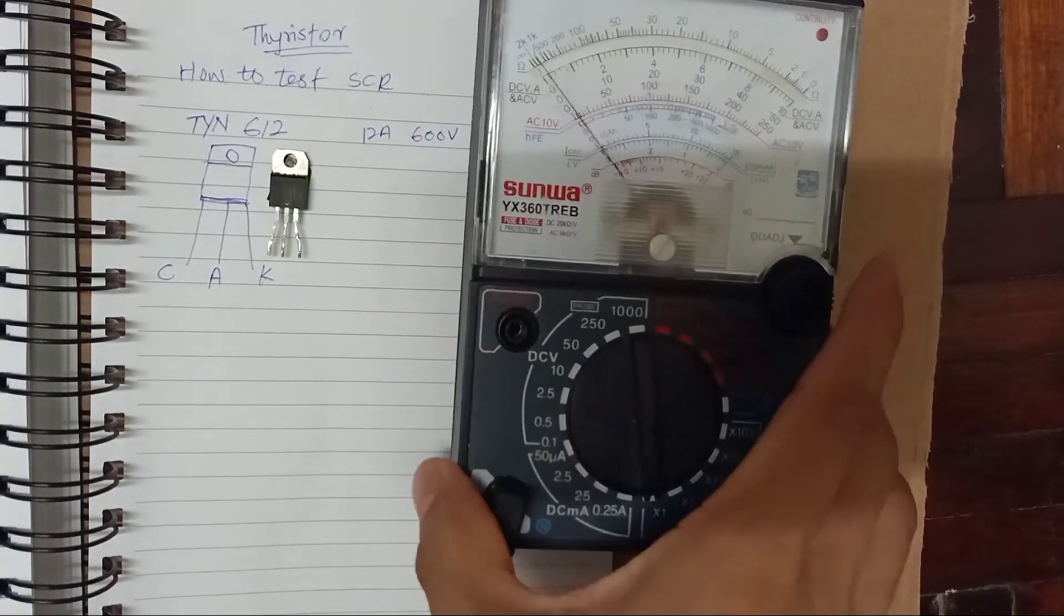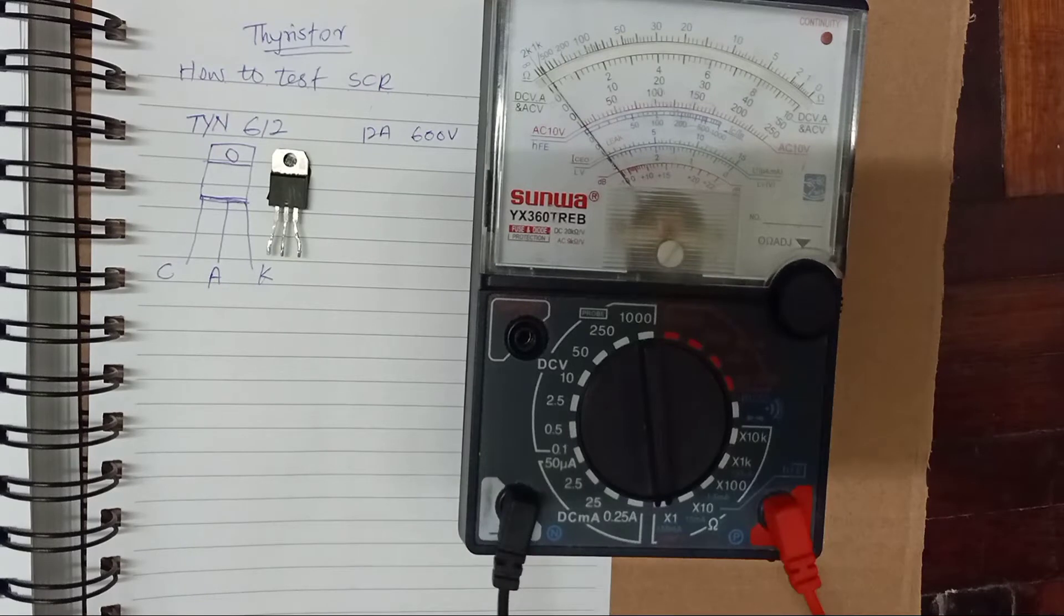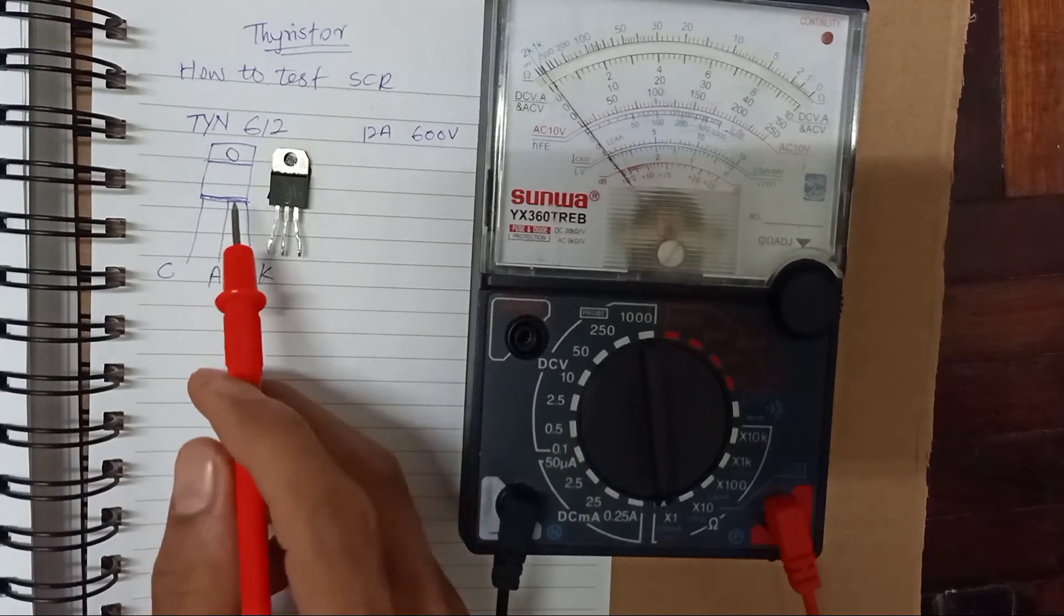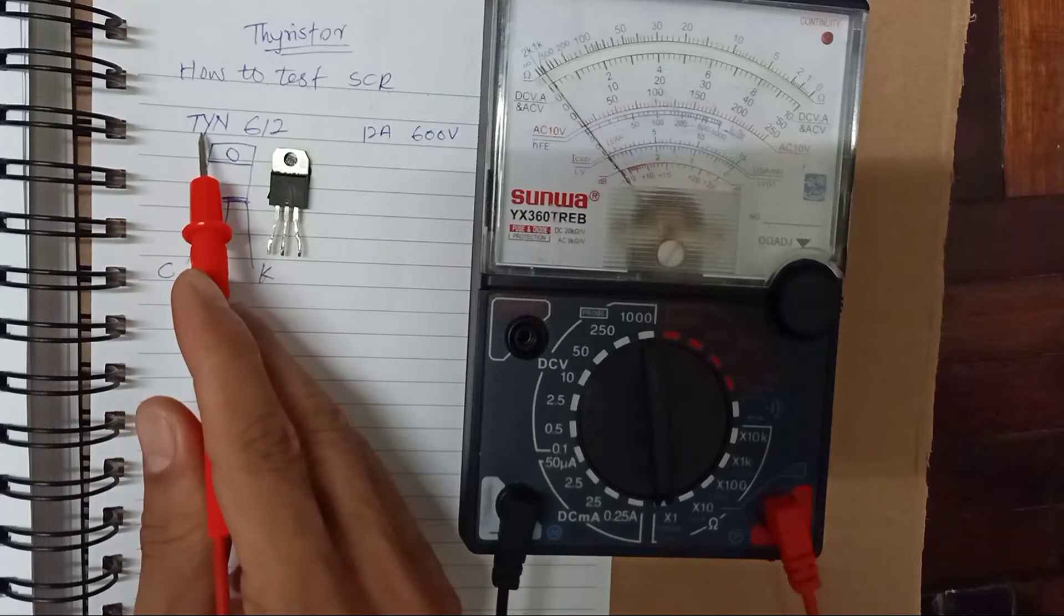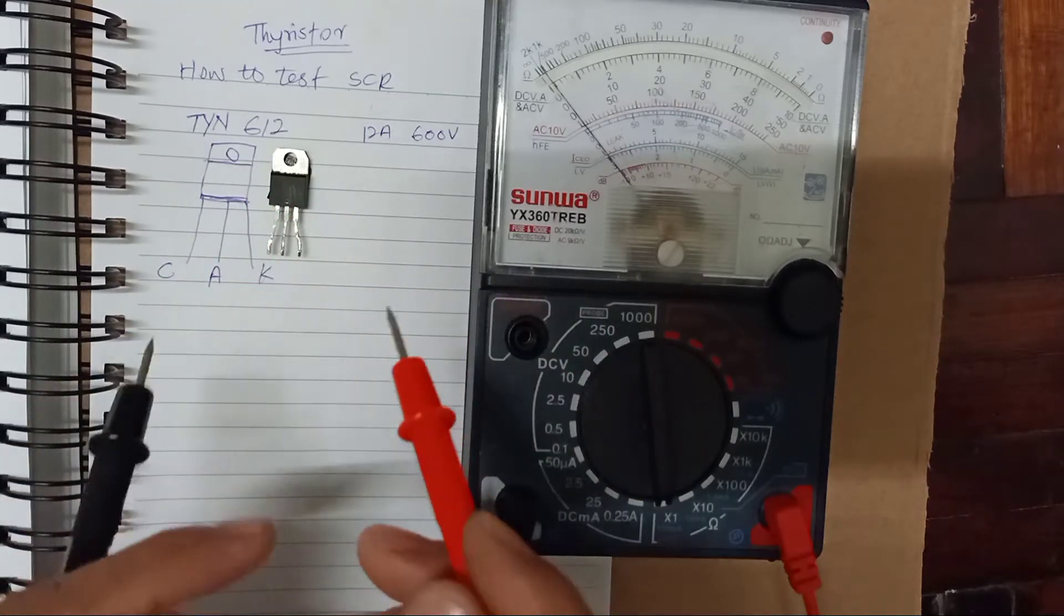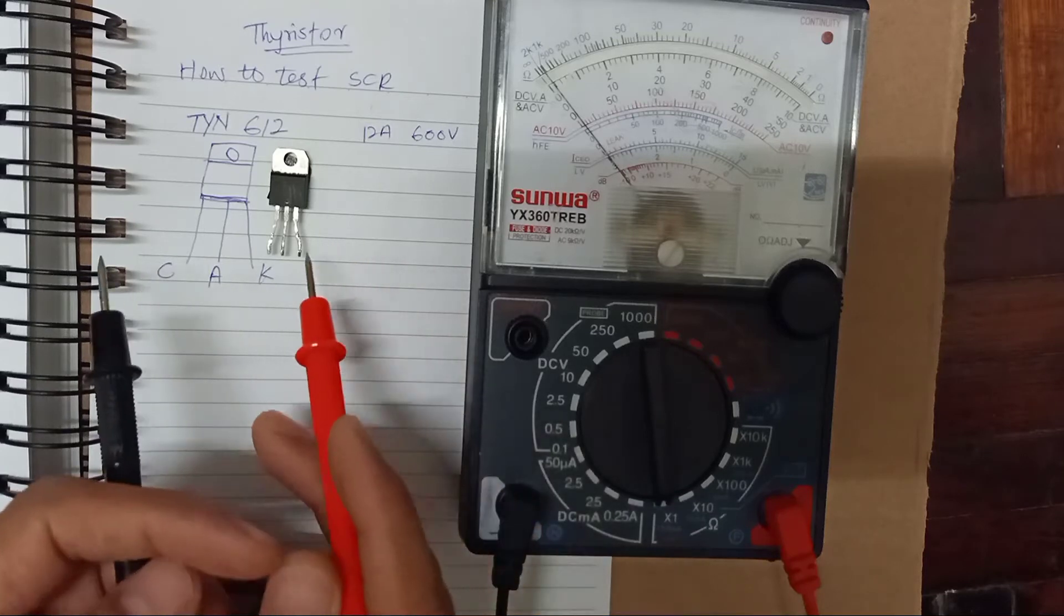So we're gonna use analog multimeter to test an SCR. So depends on which SCR, you check the datasheet of the SCR if possible. And I'm using TAYN612. So to test this Thyristor SCR.